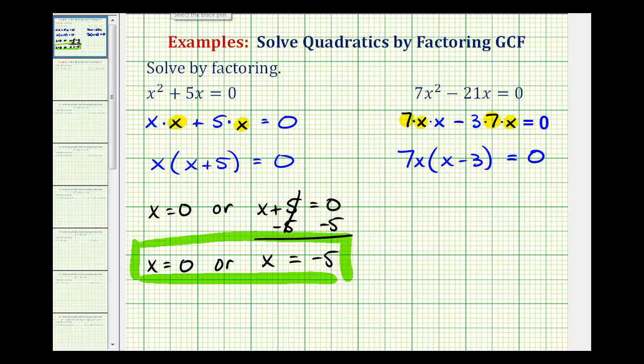Therefore, using the zero product property, either 7x equals zero, or the second factor of x minus 3 is equal to zero.